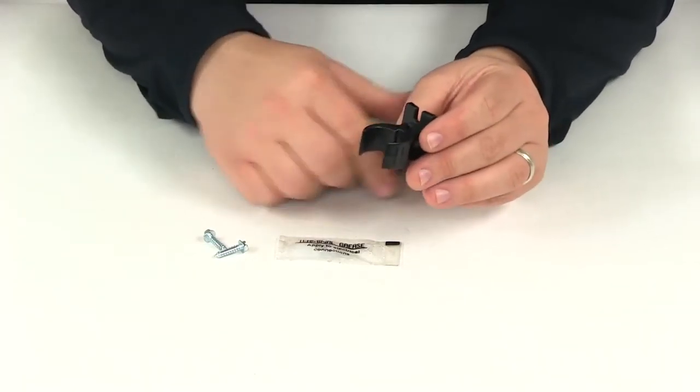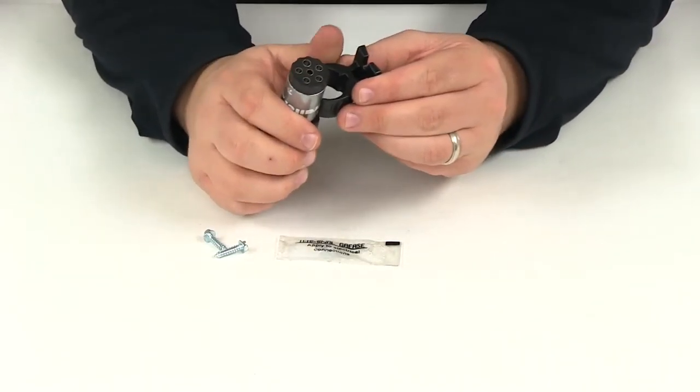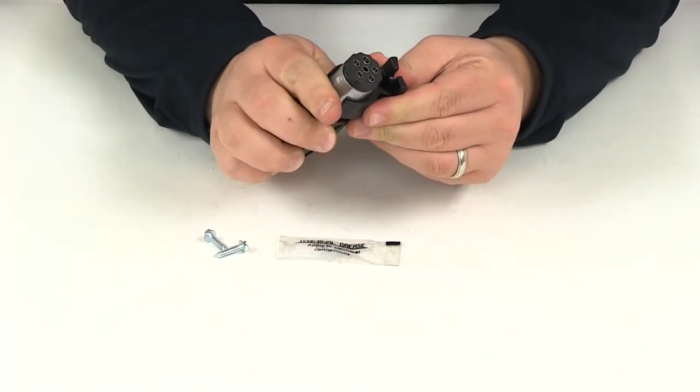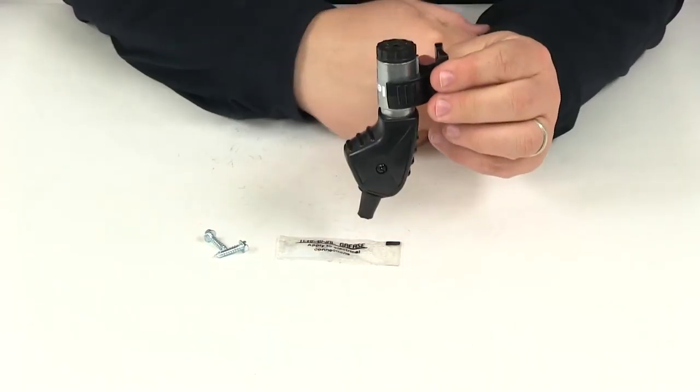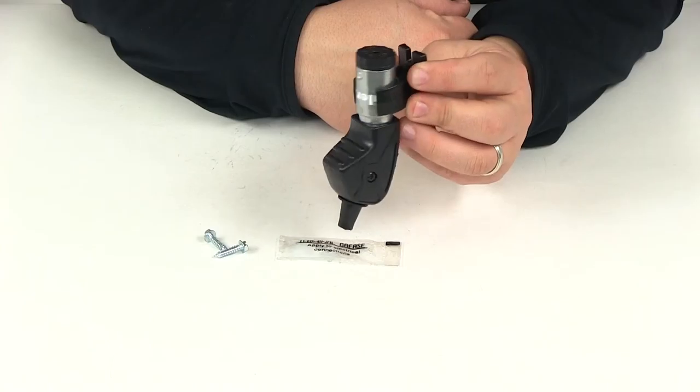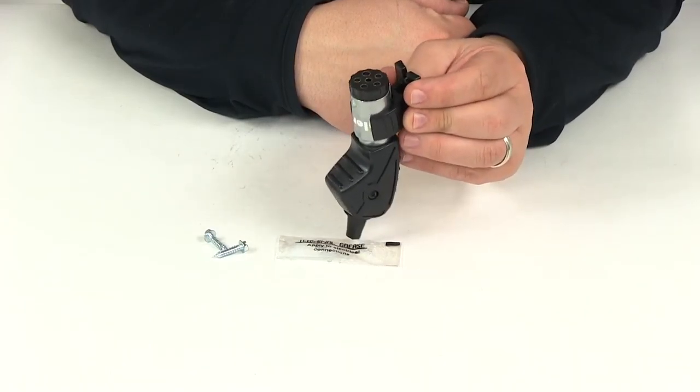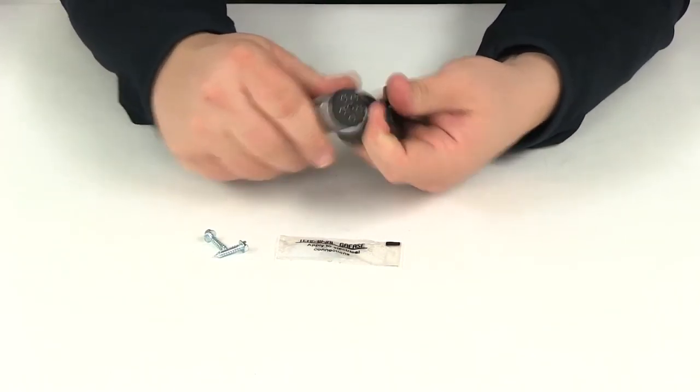So this is going to mount with the two included screws and then simply the connector snaps into place. It's going to be held there so it's always there when you need it and you can keep it up and out of the way when it's not being connected.